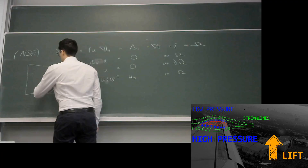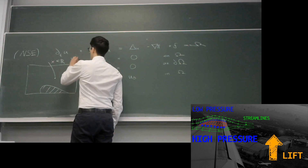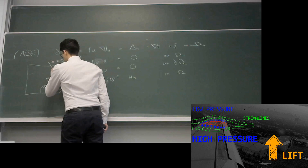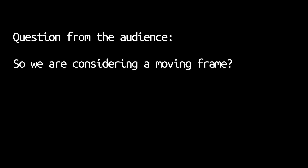We have a field of physical quantities. If I take one point with coordinate x in R², I can assign to this point via the velocity field its velocity u₁(x) and u₂(x), and the pressure, which is a scalar quantity.